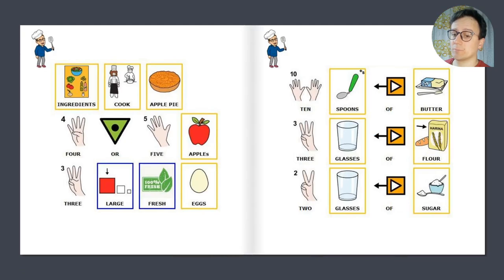Ingredients: 4 or 5 apples, 3 large fresh eggs, 10 spoons of butter, 3 glasses of flour.